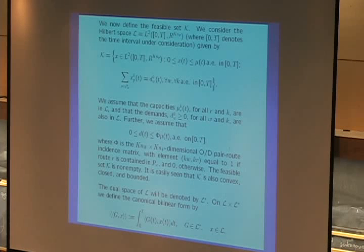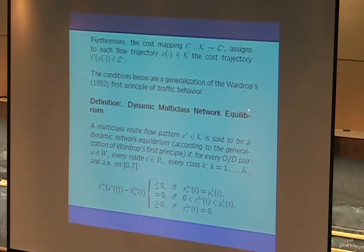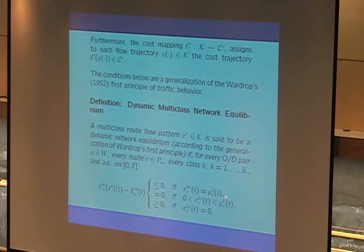Now we have to deal with different kinds of spaces, so we need more mathematics here, more tools. But it's very, very nice and very, very clean and accurate. To show you a generalization of those network equilibrium conditions, we now have dynamic multi-class network equilibrium conditions that say that messages on route R of class K, if they lie within the lower bound and upper bound, then the cost of that message class on that route will be equal to some minimum.